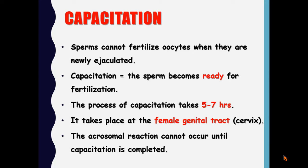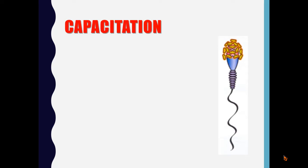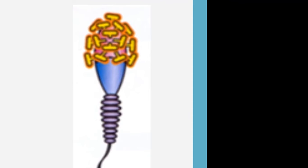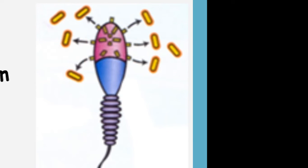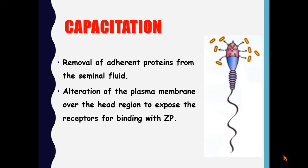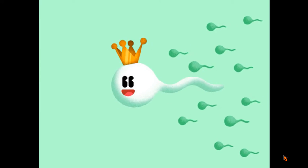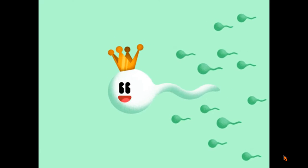If we look at this picture, this is a newly ejaculated sperm — the head region is covered with glycoproteins and other proteins from the seminal fluid. After capacitation, there will be removal of the adherent proteins from the seminal fluid, thus exposing some receptors that will bind with the zona pellucida. There will also be alteration of the plasma membrane over the head region, making the acrosomal reaction — the release of enzymes from the acrosome — easier. Capacitation also helps the sperm to be more active and motile, so they are ready to travel through the female genital tract to reach and fertilize the ovum.